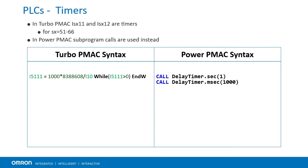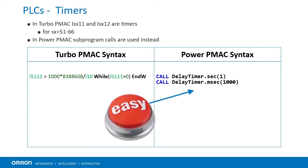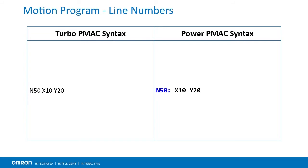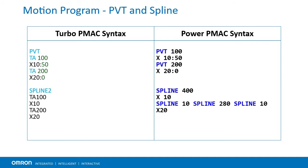In Turbo PMAC, decrementing I variables were used to create timers. In Power PMAC, subprogram calls to the built-in timer functions should be used instead. In Turbo PMAC, all PLCs were enabled on power-up and PLC1 would typically disable other PLCs not yet needed. In Power PMAC, PLCs must be enabled either in ppstartup.txt or from other PLCs to run on power-up. I5 no longer controls PLC behavior. In Power PMAC motion programs, a colon is added after the line number before the rest of the line. In Turbo PMAC, PVT moves were never segmented and TM or TA was used for move time depending on I-42. In Power PMAC, PVT moves can be segmented and the move time comes after PVT.